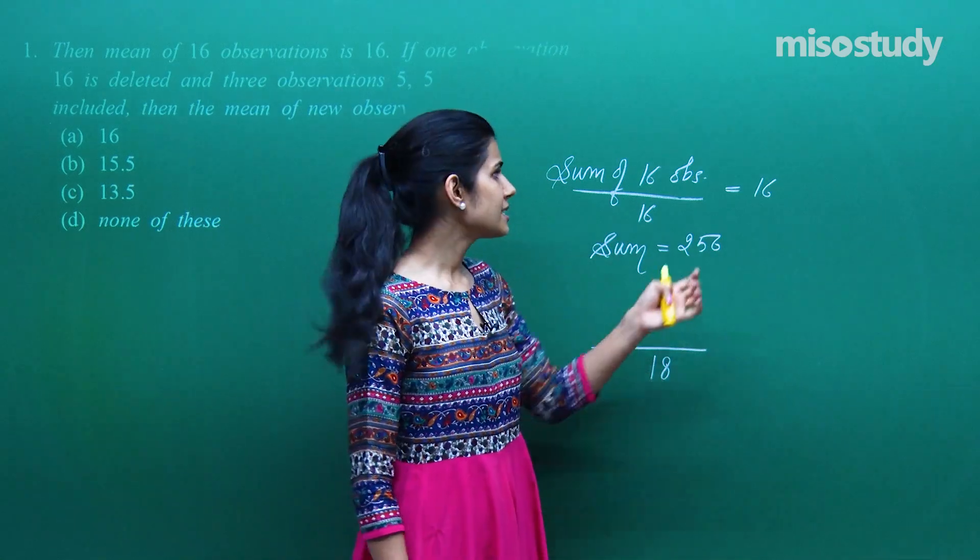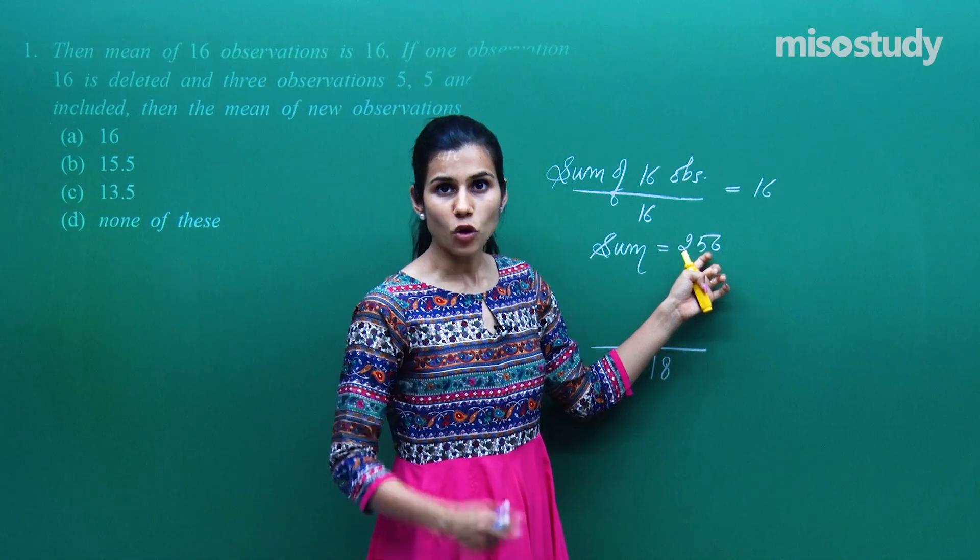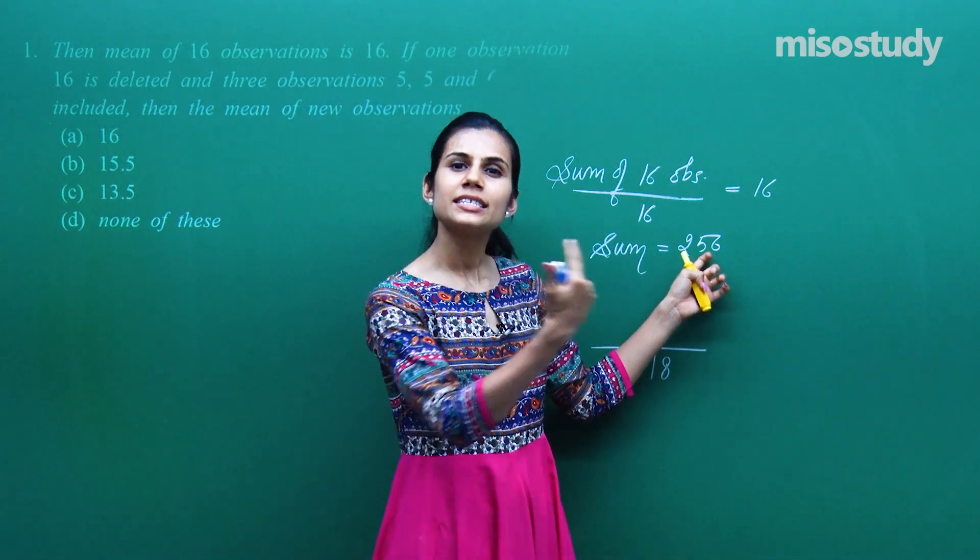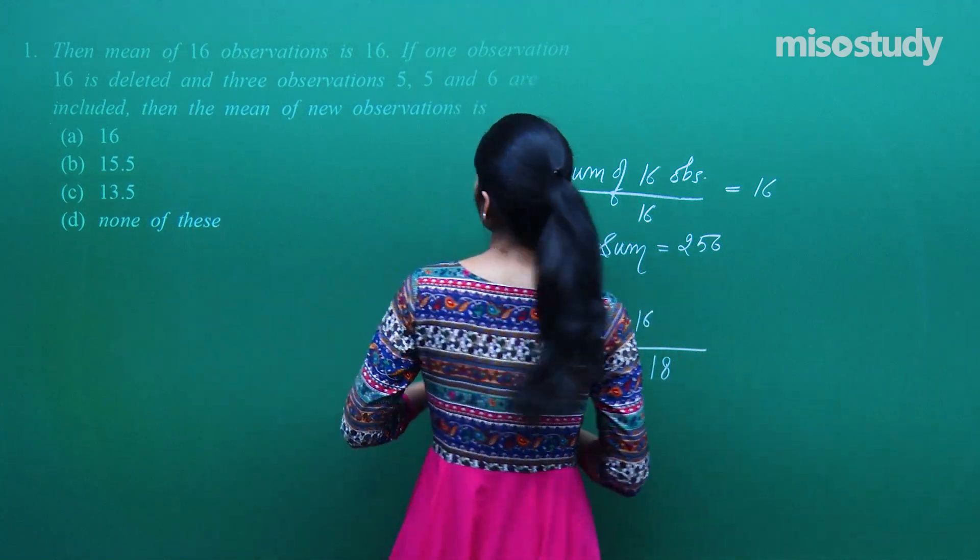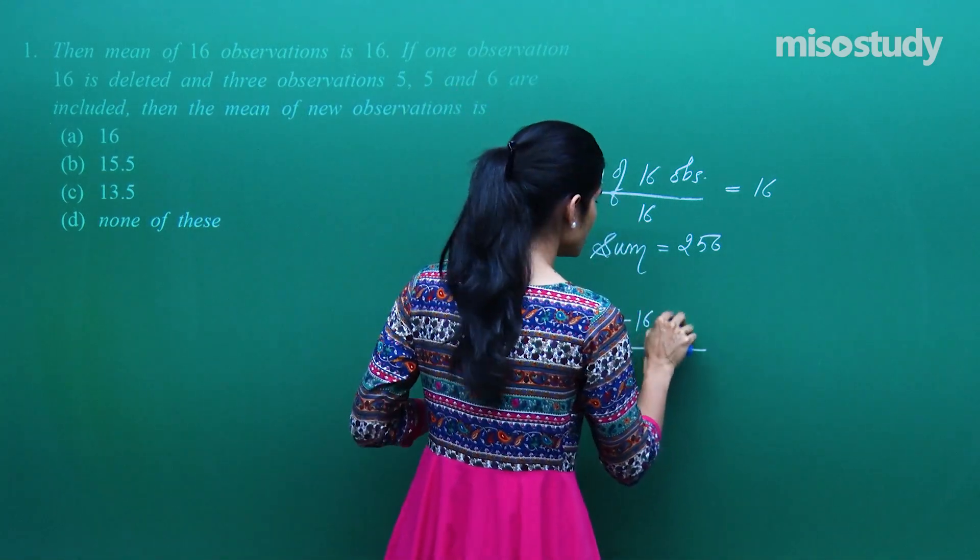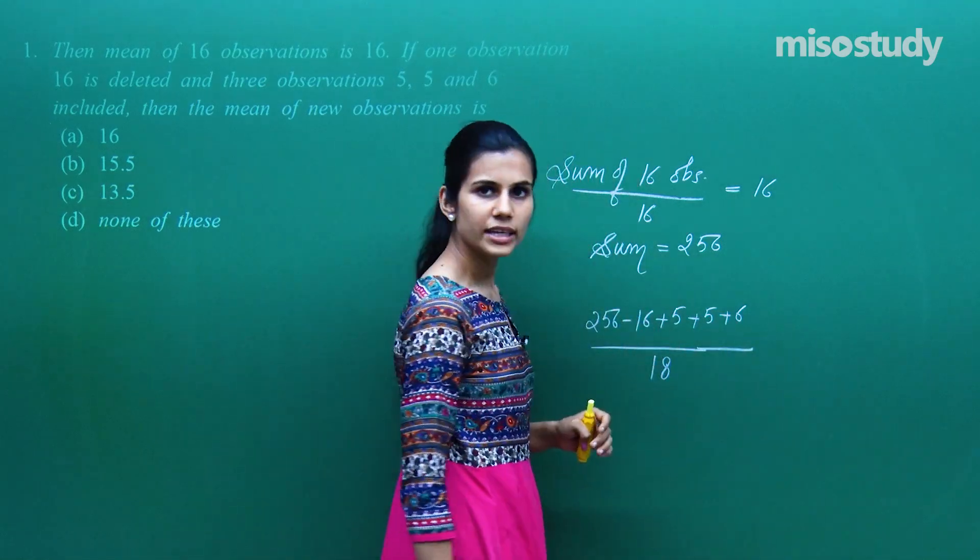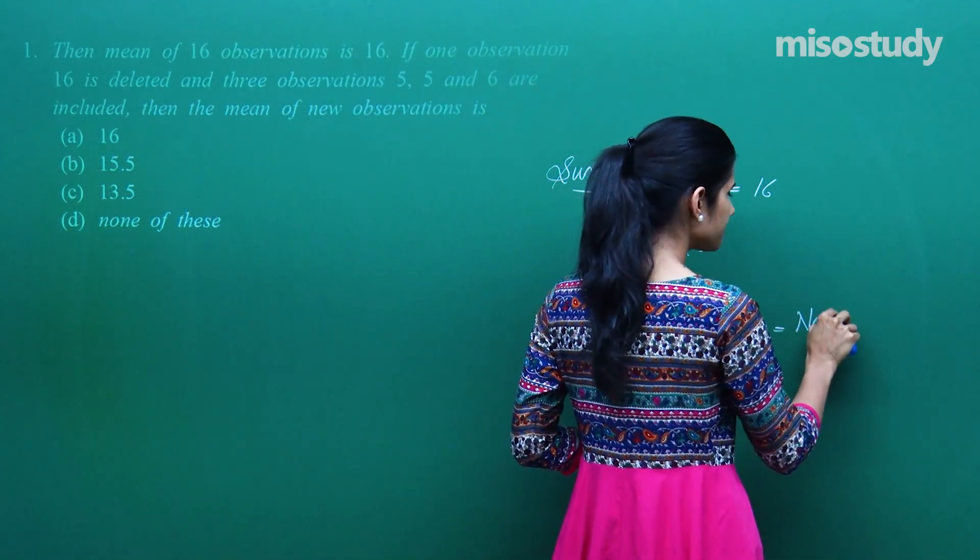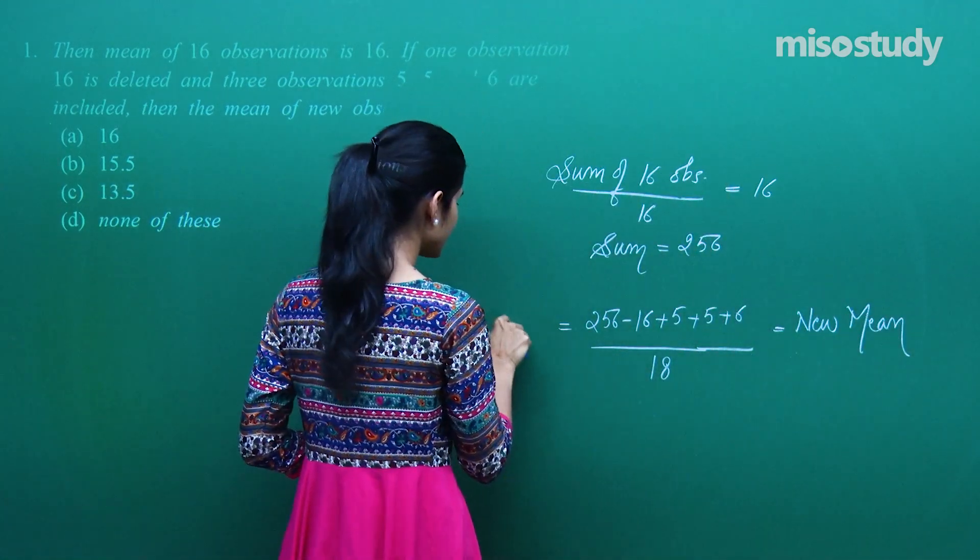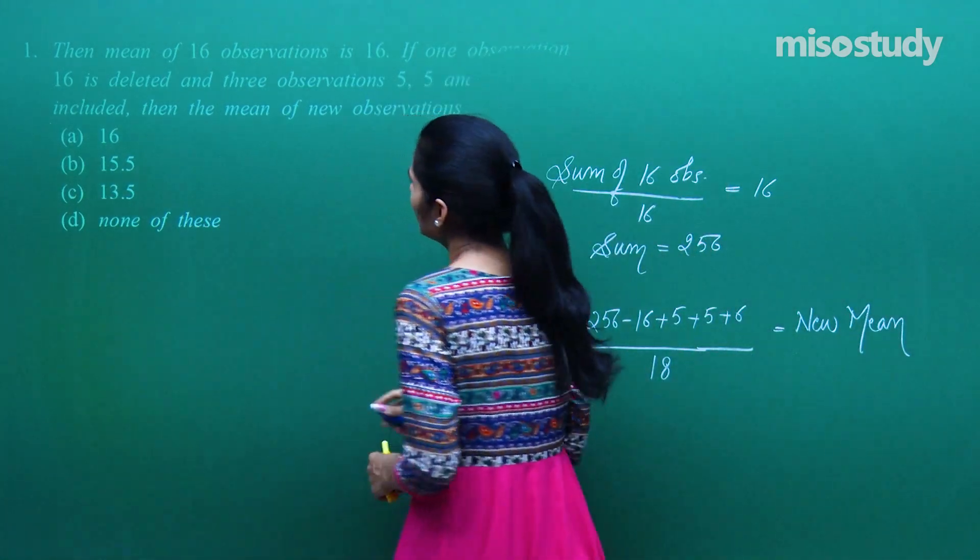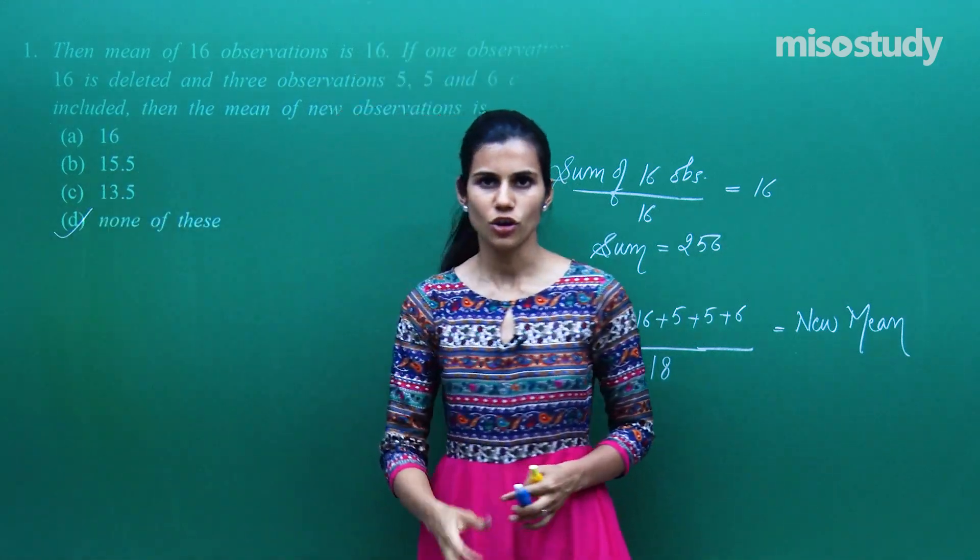Sum kaise badalega? Pehle sum tha 256, right? Us mein se 16 ko hataya, toh sum ho gaya 256 minus 16 aur fir add kar diya 5, 5, 6. So plus 5 plus 5 plus 6 whole upon 18. This is the new mean. Yeh evaluate karenge, nikal ke aata hai 14.22 which does not match with this, this or this. Hence, D is the correct option.